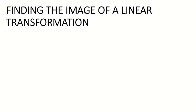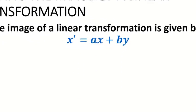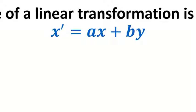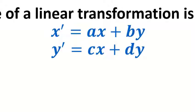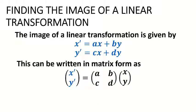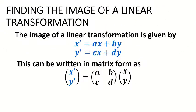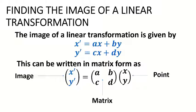Finding the image of a linear transformation: the image is given by X prime = AX + BY and Y prime = CX + DY. This can be written in matrix form as: [X prime, Y prime] = [A B; C D] multiplied by [X; Y]. So we have the image, the matrix in the middle, and the object or point.